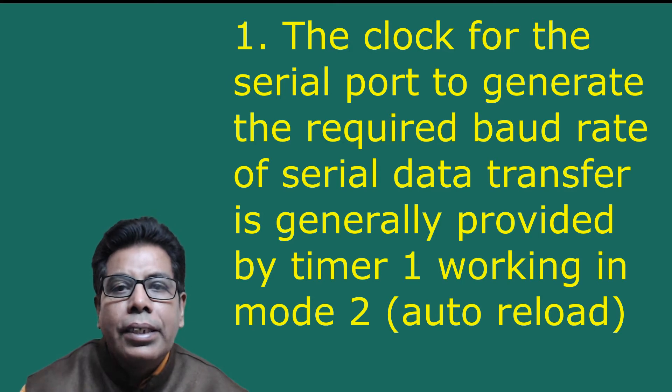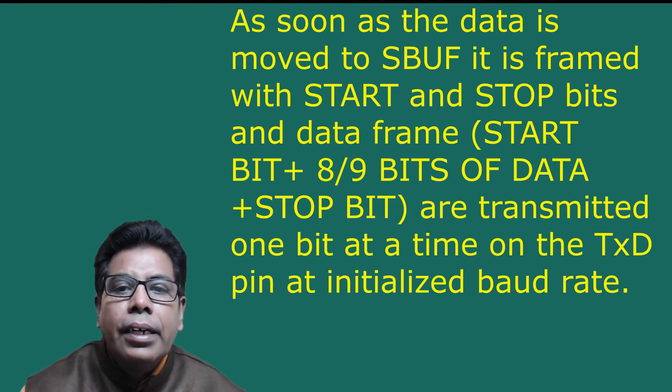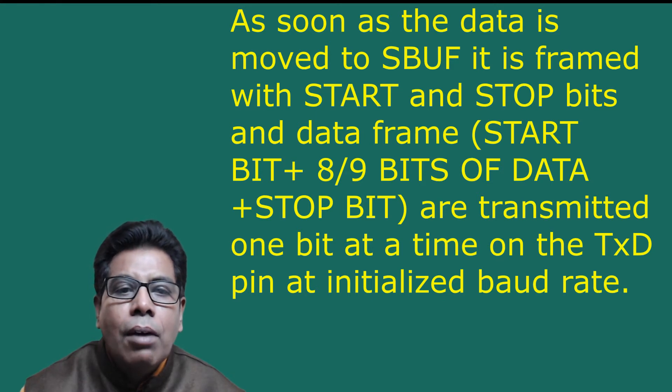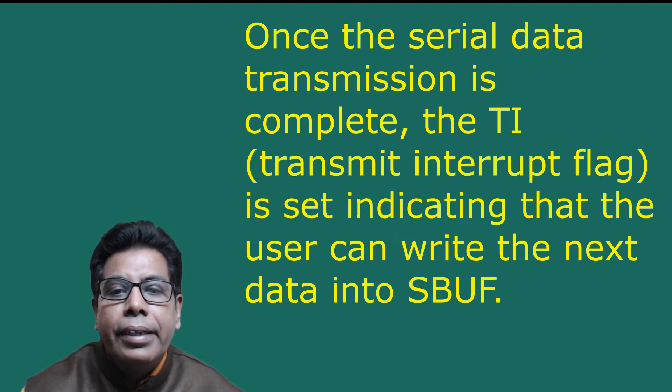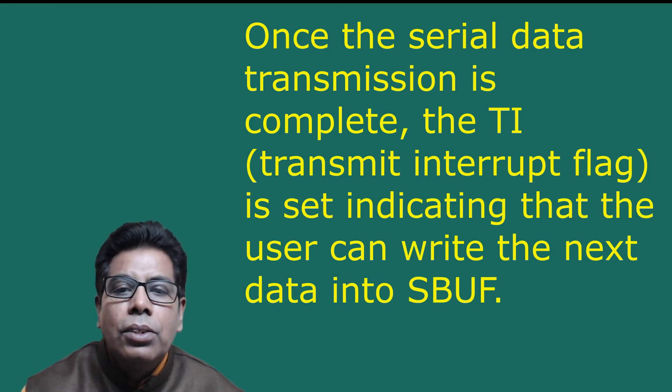Reviewing the working of the serial port for data transmission: the clock for the serial port to generate the required baud rate is generally provided by Timer 1 working in Mode 2 (auto reload mode). The SCON register is loaded with the required serial mode, start/stop bits, etc. The data is written to the SBUF register; as soon as data is moved to SBUF, it is framed with start and stop bits and transmitted one bit at a time on the TXD pin at the initialized baud rate. Once serial data transmission is complete, the transmit interrupt flag TI is set, indicating the user can write the next data into SBUF.